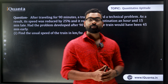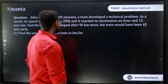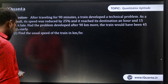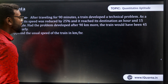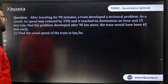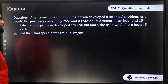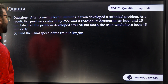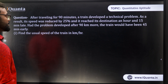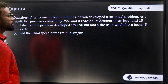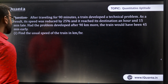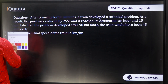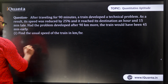Let's begin with the first question. After traveling for 90 minutes, a train developed a technical problem. As a result, its speed was reduced by 25 percent and it reached its destination an hour and 15 minutes late. Had the problem developed after 90 kilometers more, the train would have been 45 minutes early. To solve this type of question, here's what you need to do.